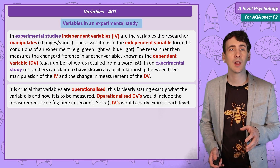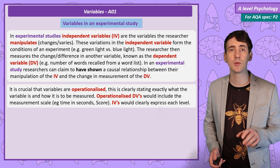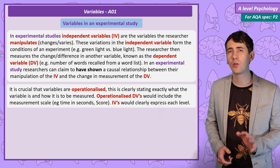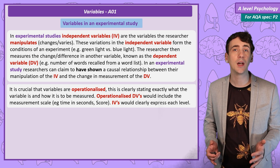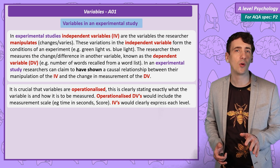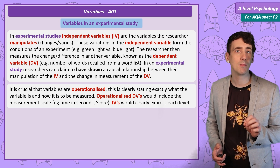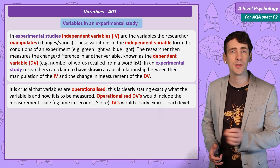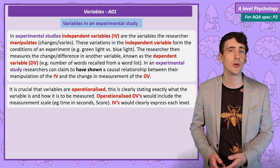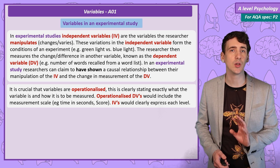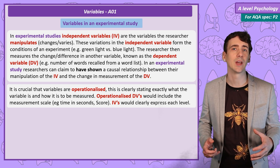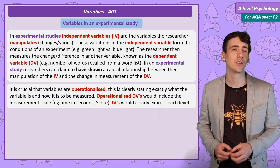In an experiment, researchers can claim to have shown a causal relationship between the independent variable and the dependent variable. But of course that's not all that's going on. There are other variables that can influence the dependent variable, and if these aren't controlled for, there won't have been an accurate measurement of the independent variable's influence on the dependent variable. We could then suggest that the study's findings are not true, because a researcher didn't set the study up in a way that controls for other explanations of the findings — or in more scientific language, the study lacks internal validity.